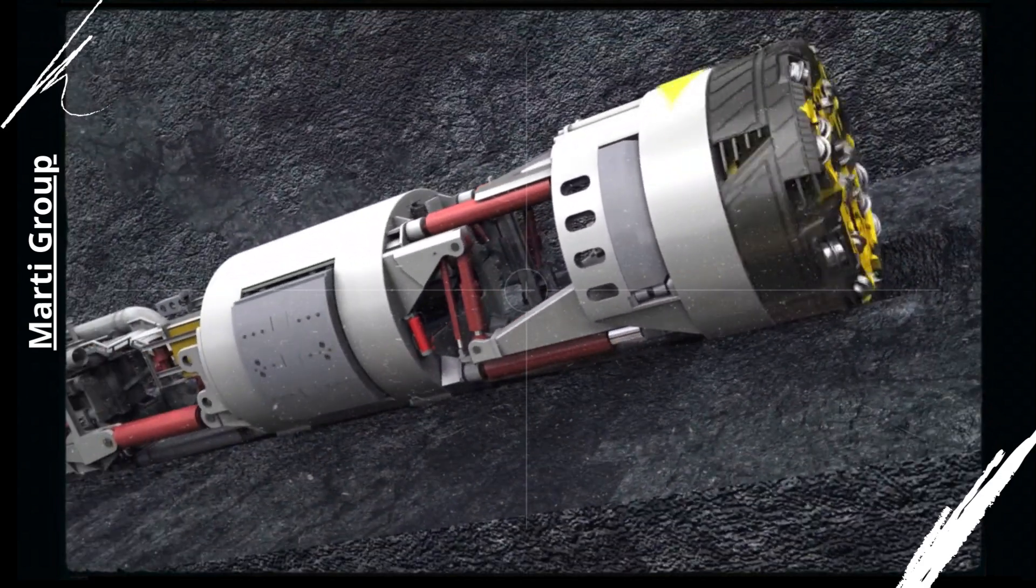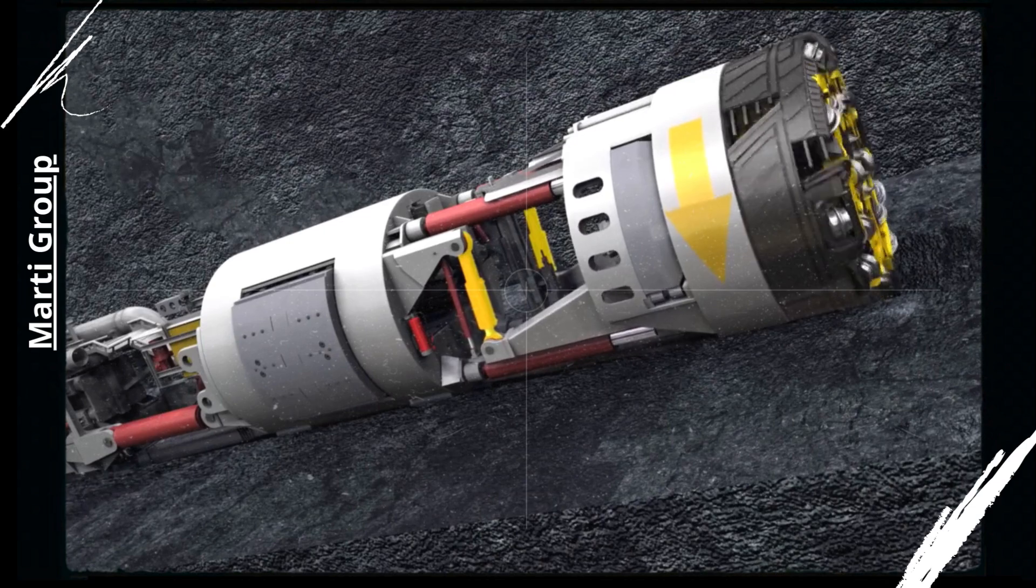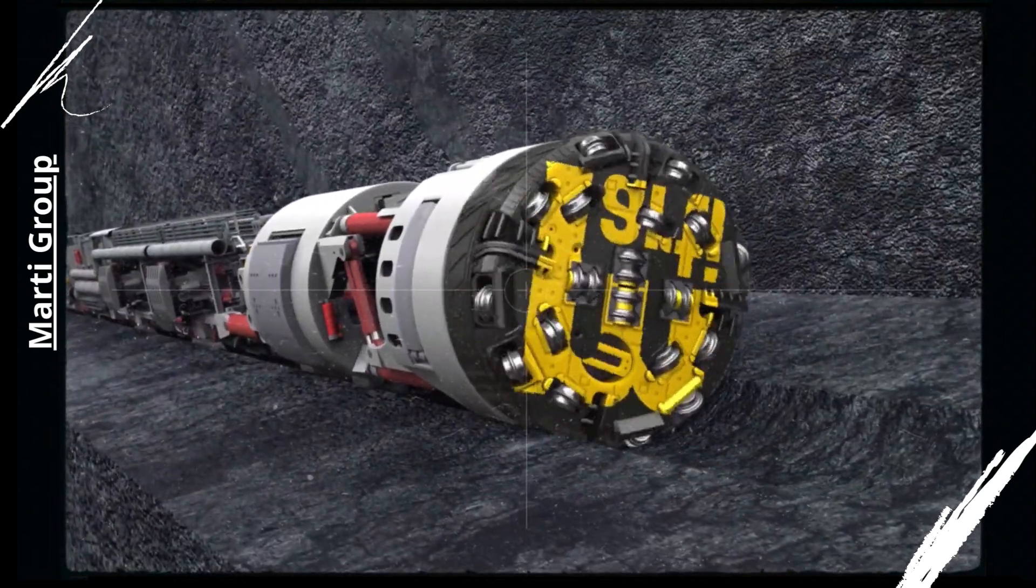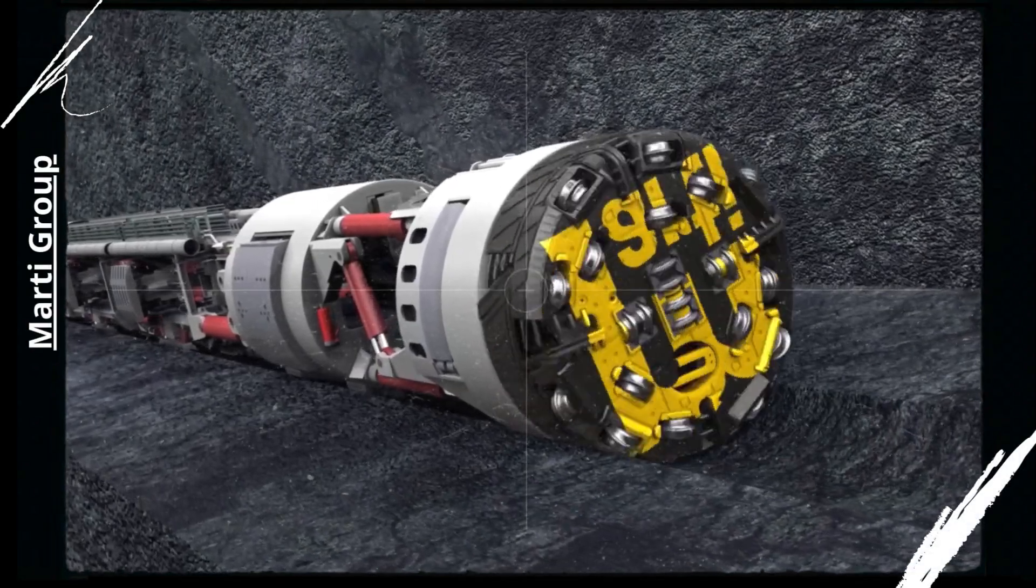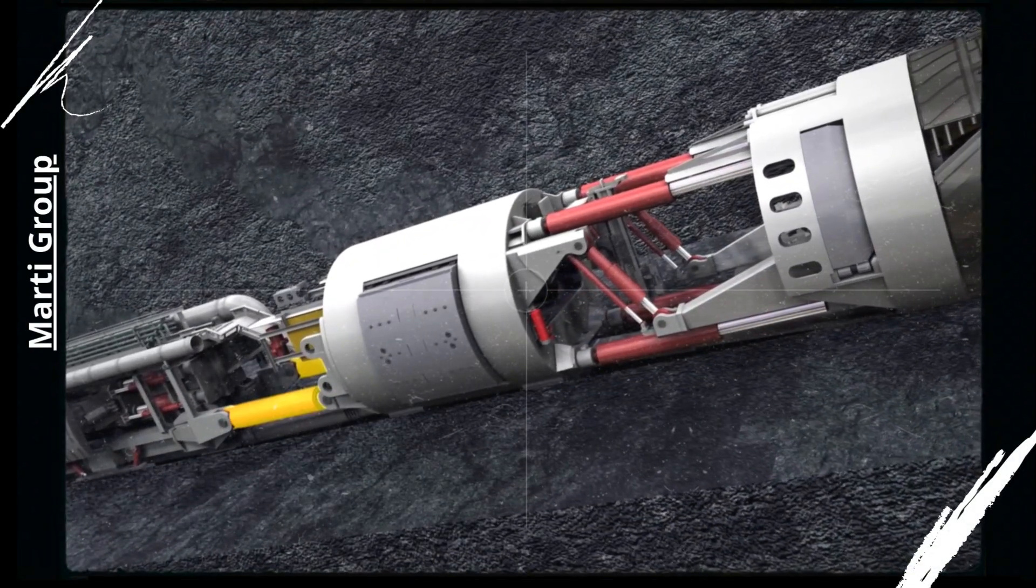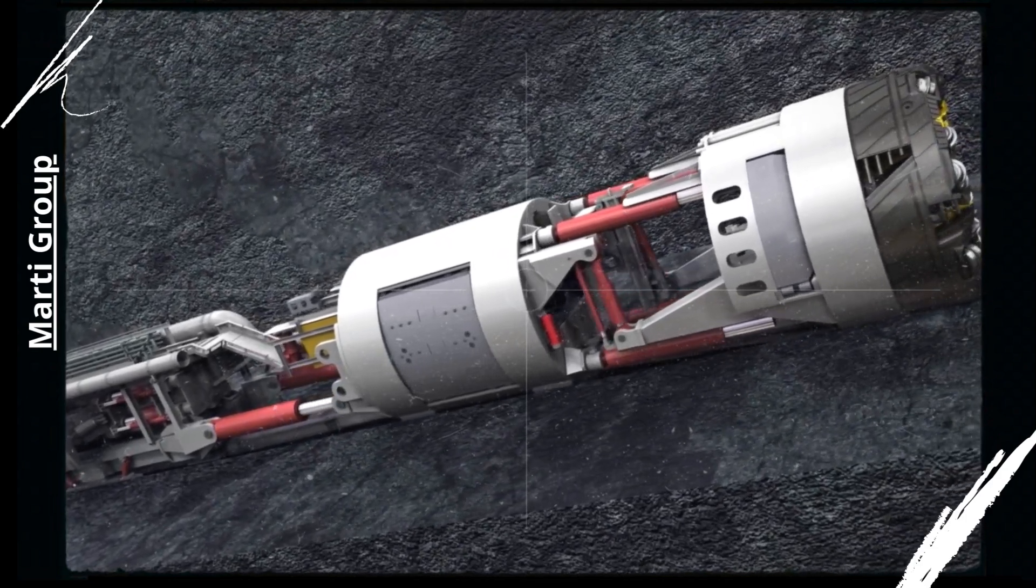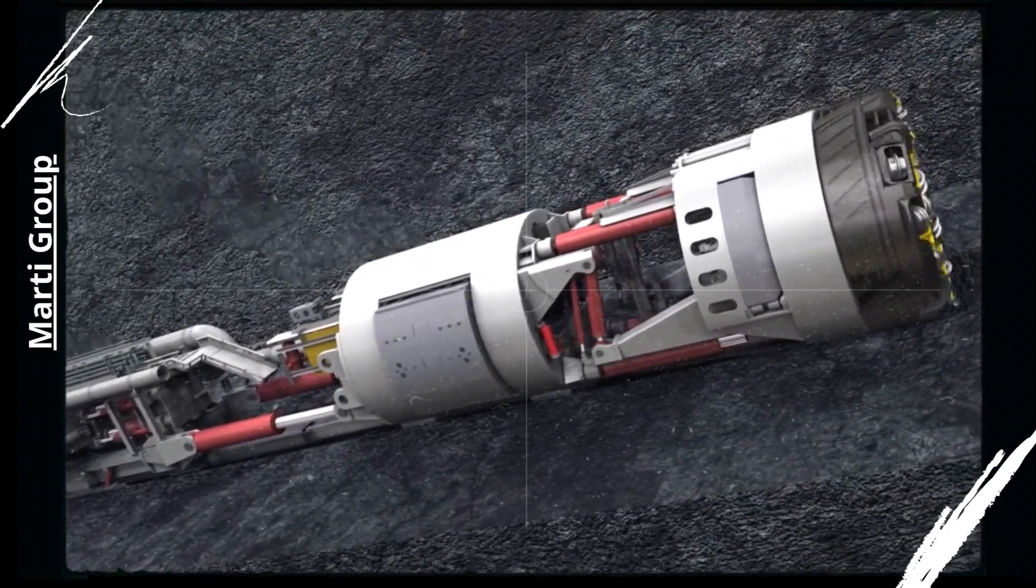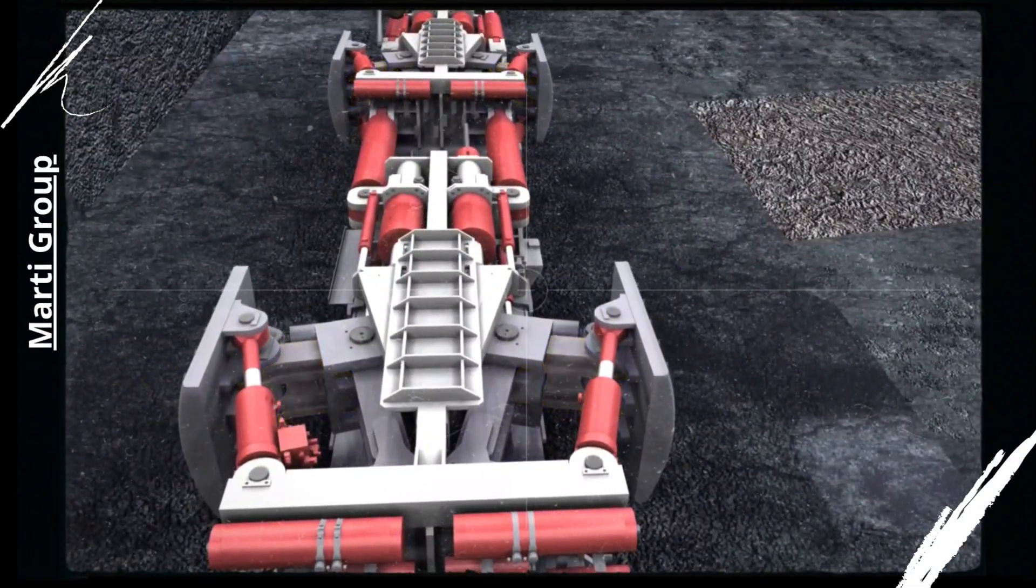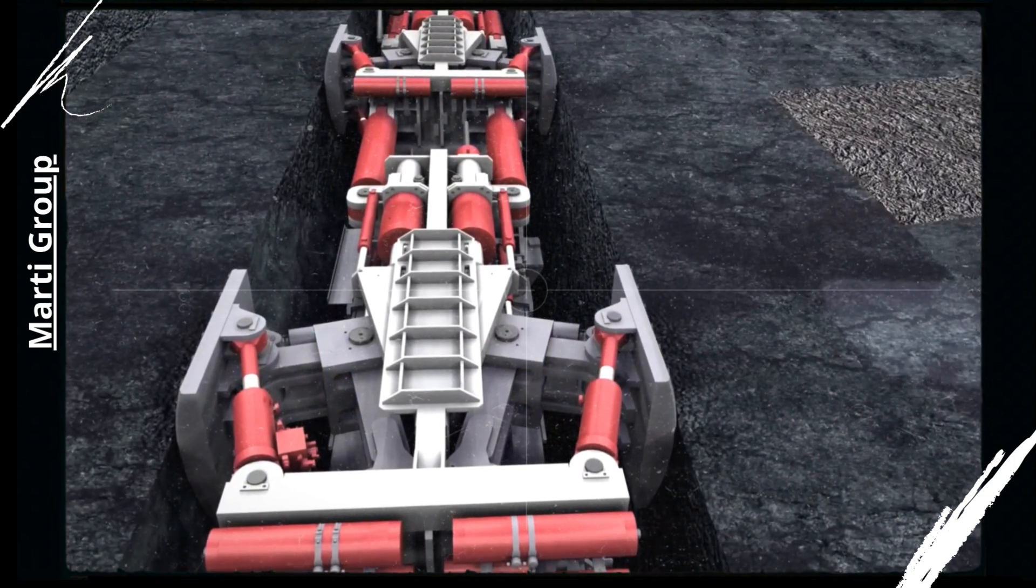These machines come in various sizes, depending on the tunnel's required diameter, and can be customized to suit specific project requirements. The TBM features a rotating cutter head at the front, which is responsible for breaking through the ground while simultaneously removing excavated material through a conveyor system. The cutting tools of the TBM are designed to endure high pressure and wear, making them suitable for long tunnel stretches.